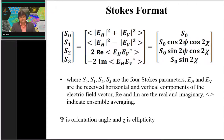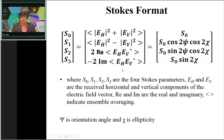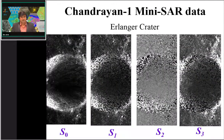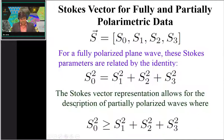The Stokes format of SAR data involves four Stokes vectors: S0, S1, S2, and S3, generated using horizontal and vertical polarimetric combinations. For Chandrayaan-1 mini SAR, data were provided in the Stokes file format. S0 contains maximum information while S1, S2, and S3 have relatively less intensity compared to S0. These are criteria for fully polarimetric and partially polarimetric data, which will be explored in detail in SAR polarimetry classes.